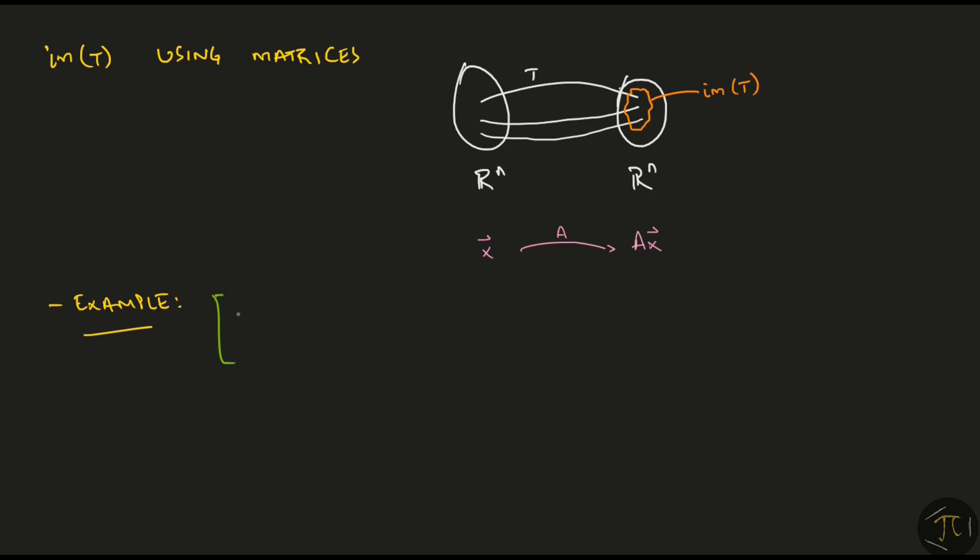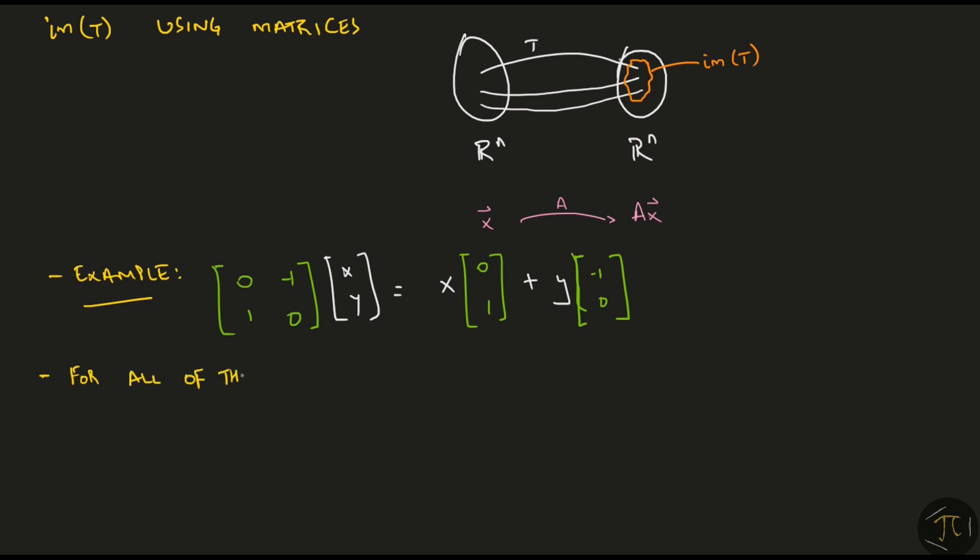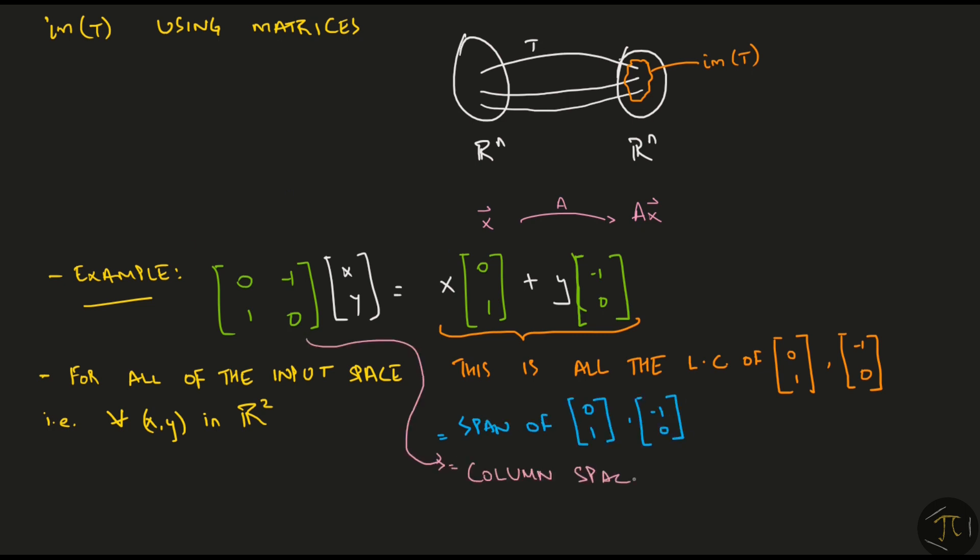As an example, let me take this rotation matrix and multiply it with an input vector. Now for all the input space, that is for all the vectors x, y in R2, this expression is all of the linear combinations of the vectors 0, 1 and minus 1, 0. Or in other words, it is the span of these vectors. Or in yet other words, this is the column space of the given matrix. Exactly what is the column space will be taught in the future videos, although I am sure you can already guess this.